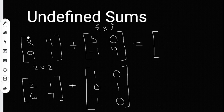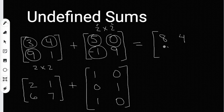When I add them, I'm going to circle each number and add up numbers that are in the same position. In the top left, I have three and five, which gives me eight. The next two numbers give me four plus zero, which is four. Then I move on to the bottom row. I have nine plus negative one, which is eight, and I have one plus nine, which gives me ten.